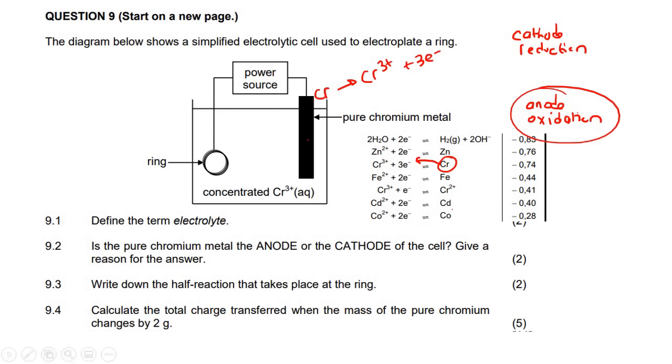So oxidation goes with anode. So we can say that this is the anode. Why? Because the chromium is being oxidized. You could say the Cr is being oxidized.